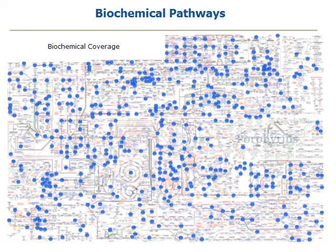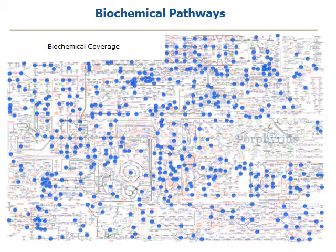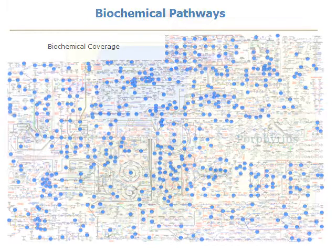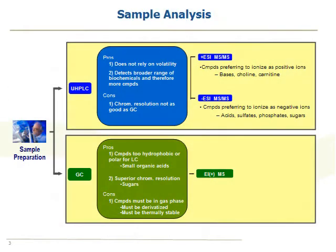The unfortunate problem associated with metabolomics is that the chemical diversity of the small molecules in this pathway chart is pretty extreme. Unfortunately, technology today doesn't allow us to have one analytical method that will detect the breadth of chemicals in this pathway. For that reason, most of the field has adopted a means of diversifying one's methods to be able to expand the number of compounds that you can detect, and this is very much what we've done with our platform.